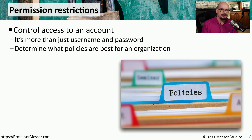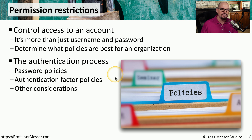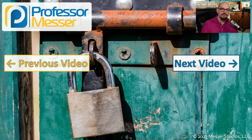A type of data protection that we use every day are permission restrictions. This means when you provide your username and password, there's a series of rights and permissions that are associated with that particular account. This starts with the authentication process itself — we need safe and secure authentication, so we should have minimum password policies. Maybe there are additional authentication factors that have to be used during the login process, and you might have additional checks and balances that occur when someone initially logs in. Once someone logs in, there may be additional security associated with that account, such as groups or file permissions that limit the type of data that particular user can access.